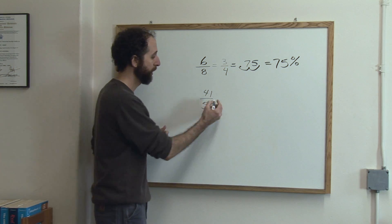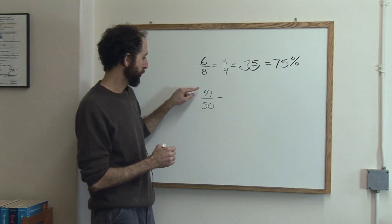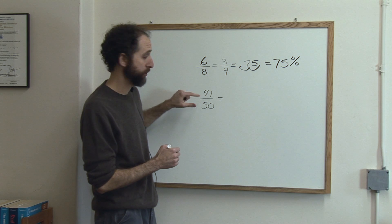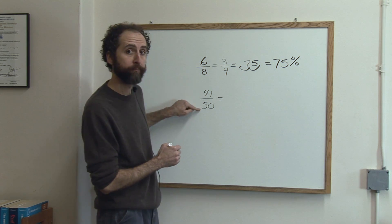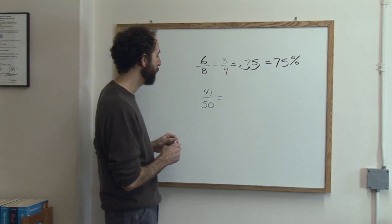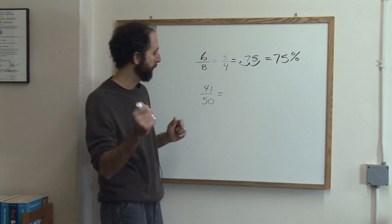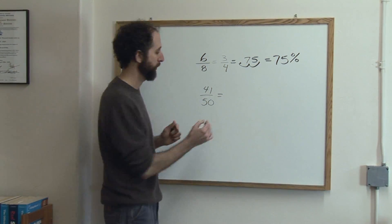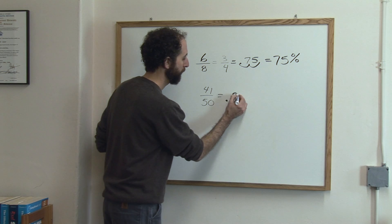So if you got 41 out of 50, again you just turn that fraction into a decimal by dividing the top by the bottom. If you do that on your calculator, 41 divided by 50, you'll get 0.82.